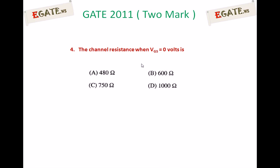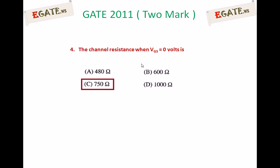The answer options are: A. 480 ohms, B. 600 ohms, C. 750 ohms, D. 1000 ohms. The right answer for this question is 750 ohms. We are going to calculate the channel resistance — the final answer is 750 ohms. We will see the details.